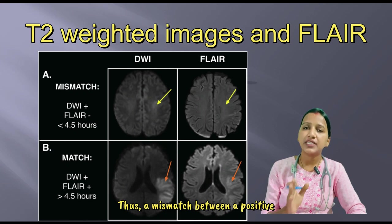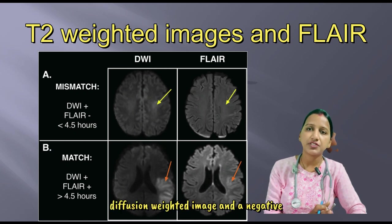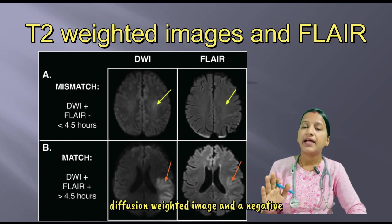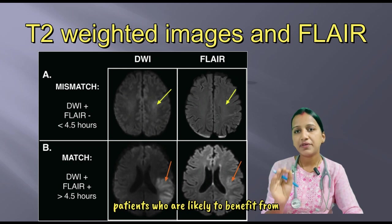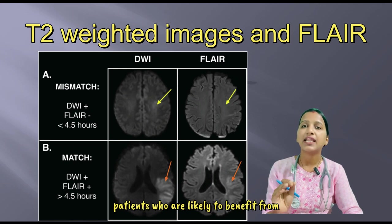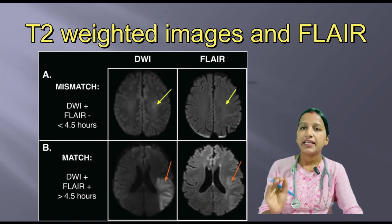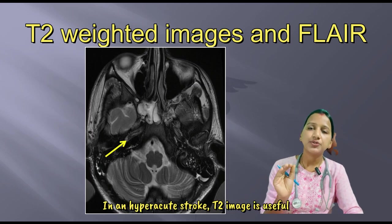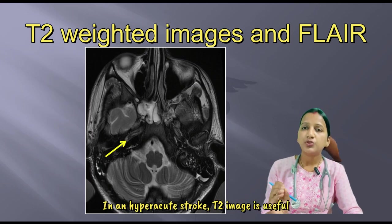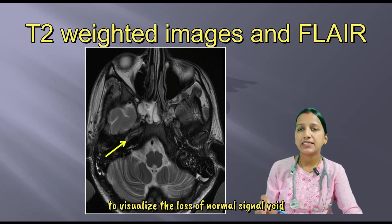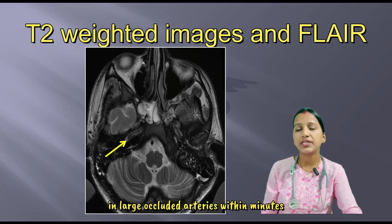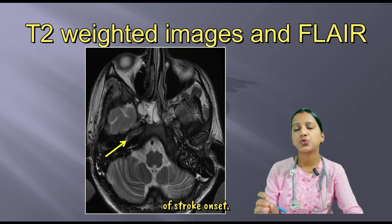A mismatch between a positive diffusion-weighted image and a negative FLAIR image helps in identification of patients who are likely to benefit from thrombolysis. In a hyper-acute stroke, the T2 image is useful to visualize the loss of normal signal void in large occluded arteries within minutes of stroke onset.